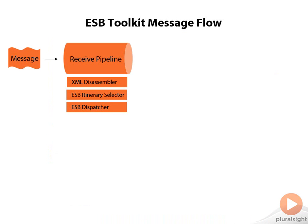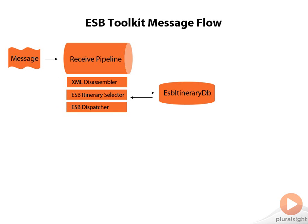Now that we've taken a look at the high level architecture of the ESB Toolkit, let's take a look at a sample message flow. First, we're going to receive a message into BizTalk server through an adapter. This message will pass through a receive pipeline, which may contain various stages including the XML disassembler, the ESB itinerary selector, and the ESB dispatcher. The first ESB-related task is that the itinerary needs to be attached to the message.